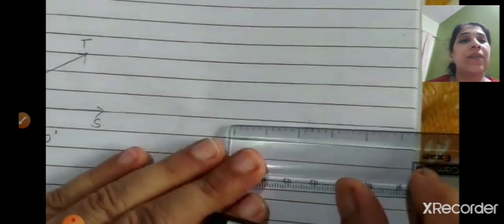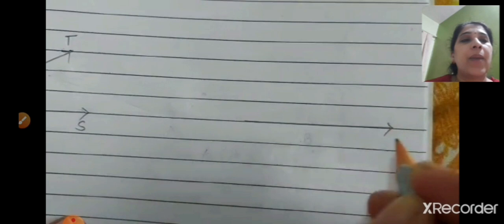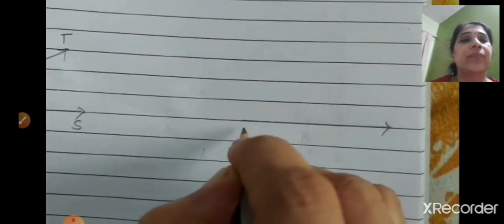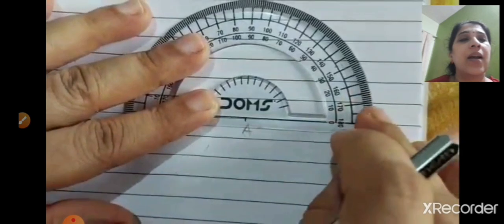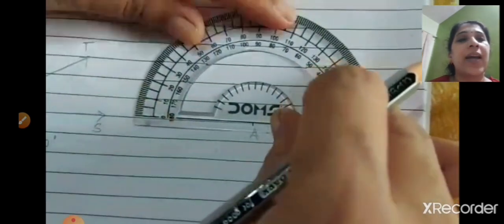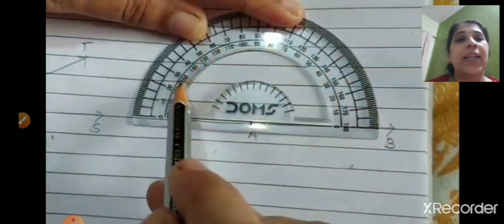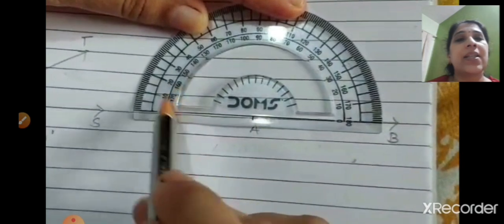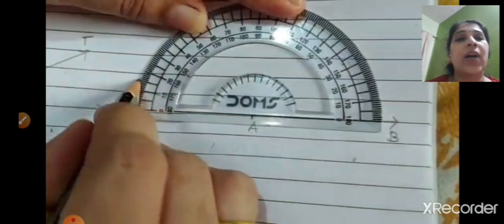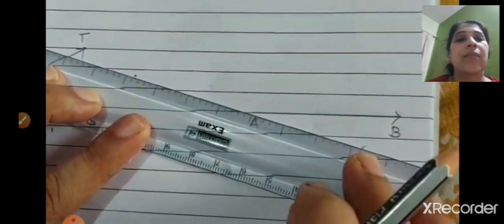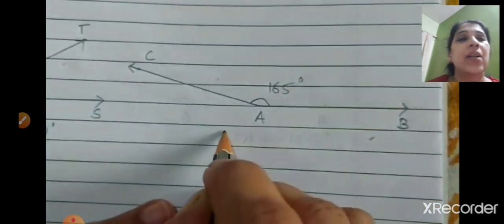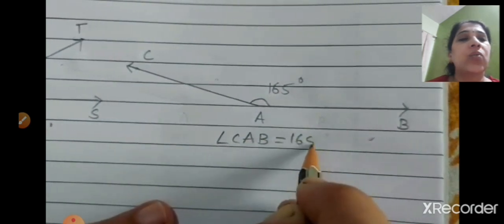Next is 165 degrees. Draw a straight line and mark the two points as A and B. Keep the center of the protractor on point A. From the left, count 180, 170, 160 — 165 is between 160 and 170. Mark that point, join both lines, and label the third point C. Near A write 165 degrees, so angle CAB = 165 degrees.